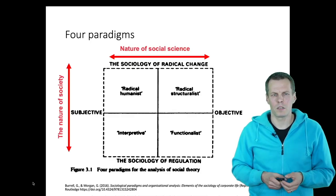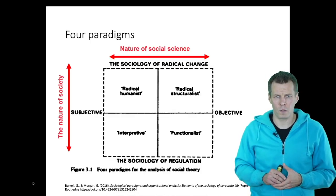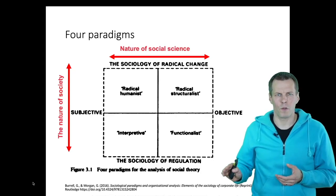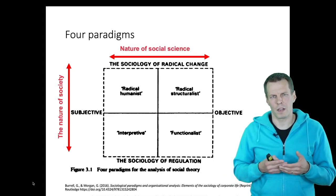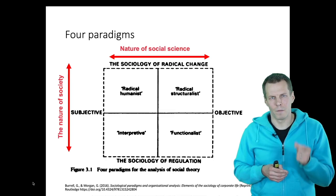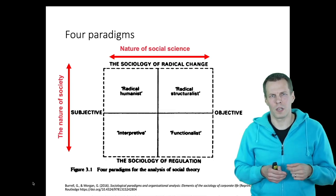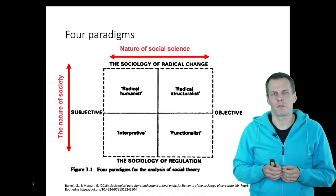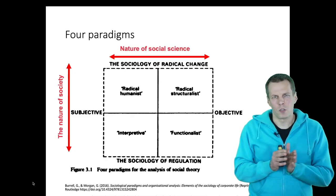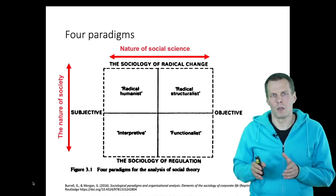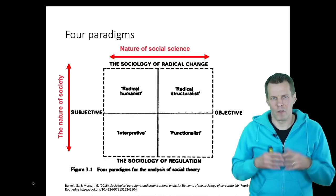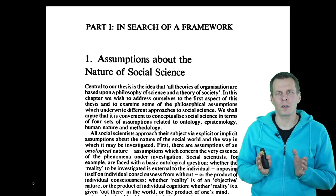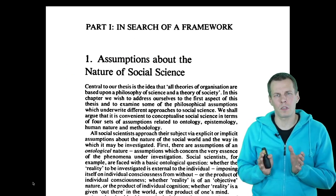The other dimension is the nature of society. They focus on theories of regulation and theories of radical change. So are we trying to explain how societies maintain order, or are we trying to explain why societies change over time — why there are revolutions and things that break the order? Let's take a look at these dimensions in more detail.